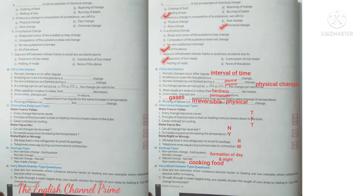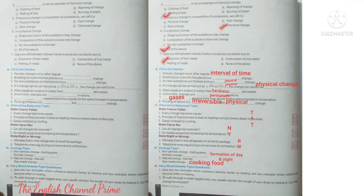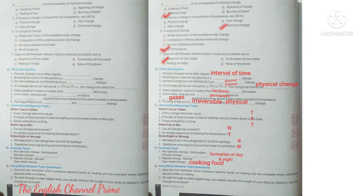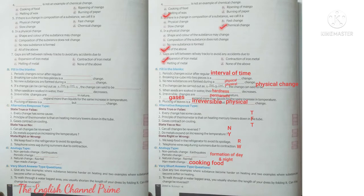Fifth question: If there is a change in composition of a substance, we call it a chemical change. The substance will be completely different. Next, question six: In a physical change — the size, shape and color of the substance may change; composition of the substance does not change; no new substance is formed — or all of the above? Yes, it is all of the above. Option D.